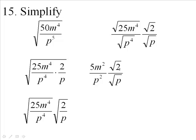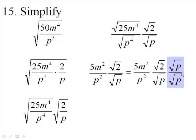Now I've got the square root of 2 over the square root of p, and we can't have a radical in the bottom. To get rid of the radical in the bottom, I need to multiply the top and bottom of this fraction by the square root of p.